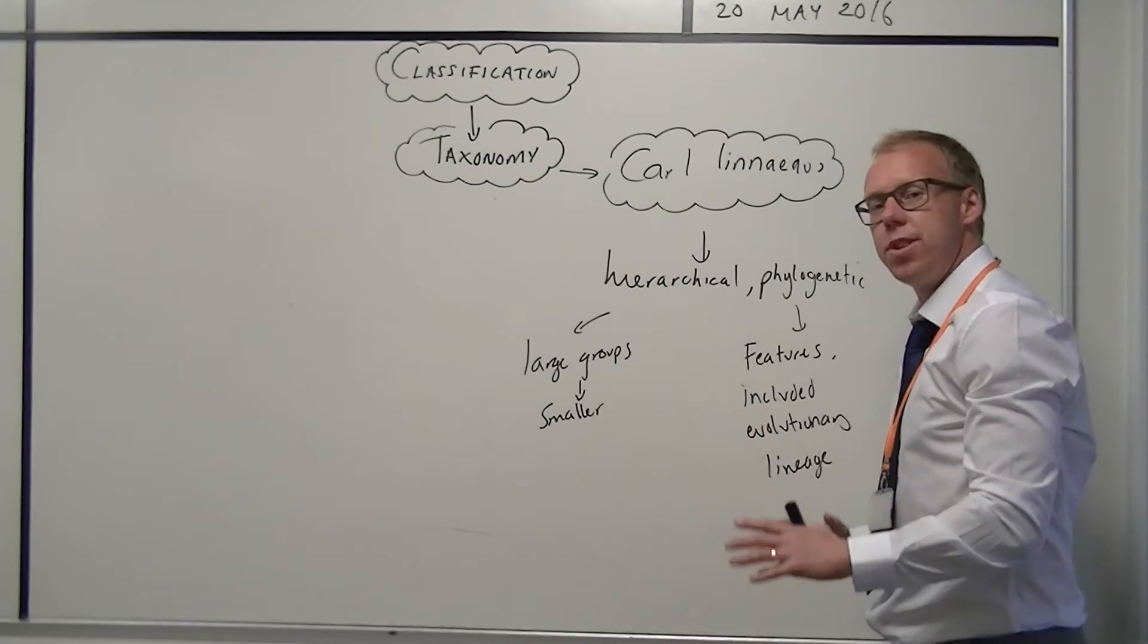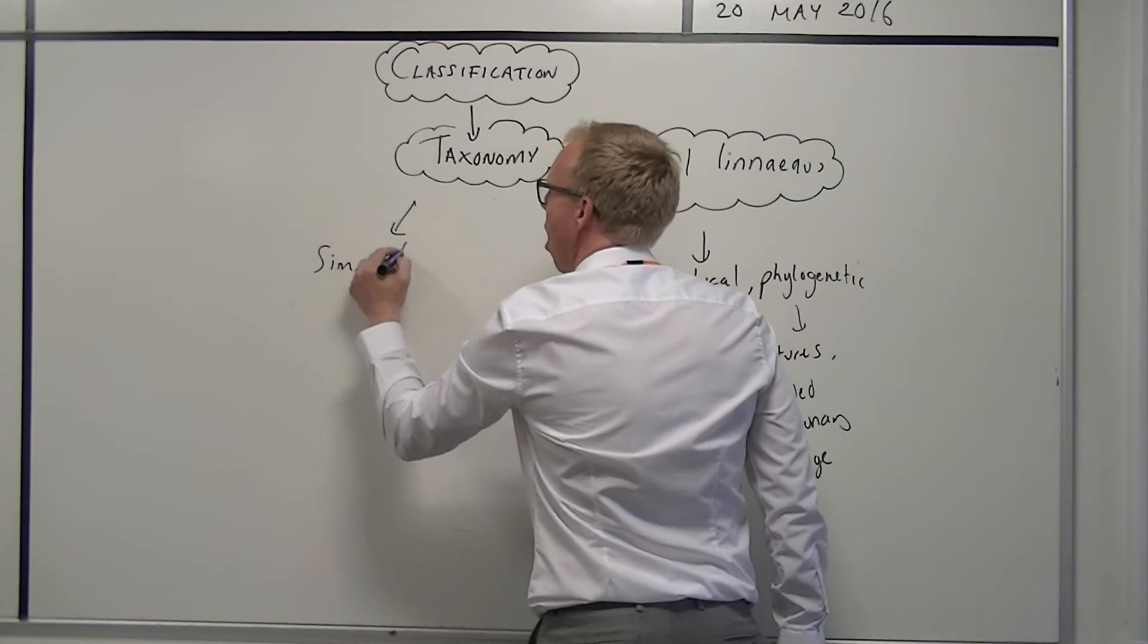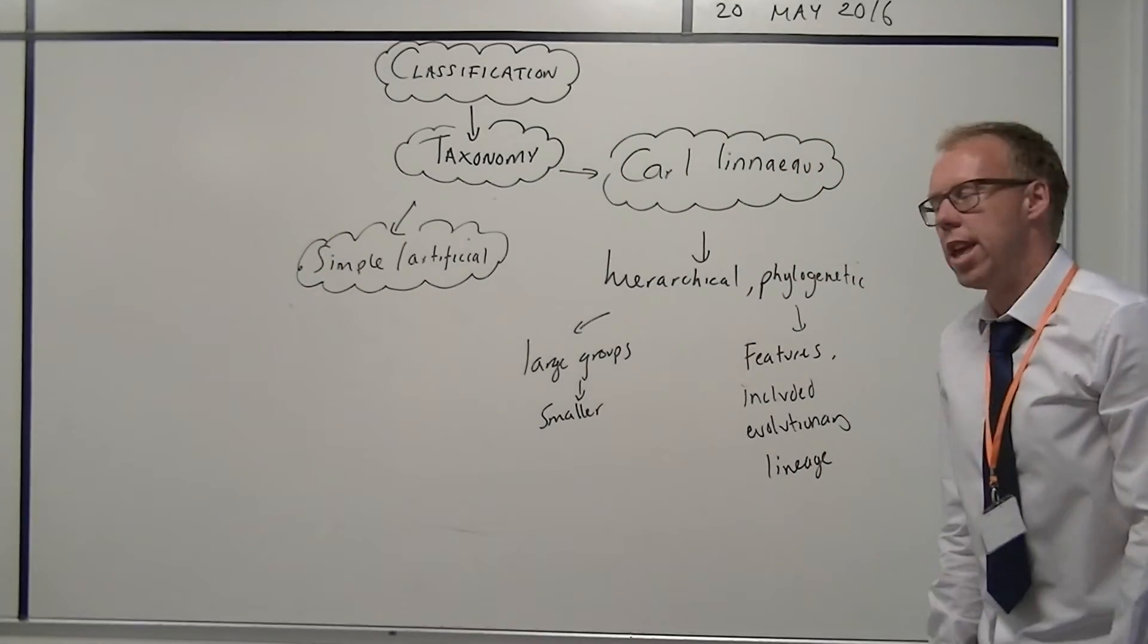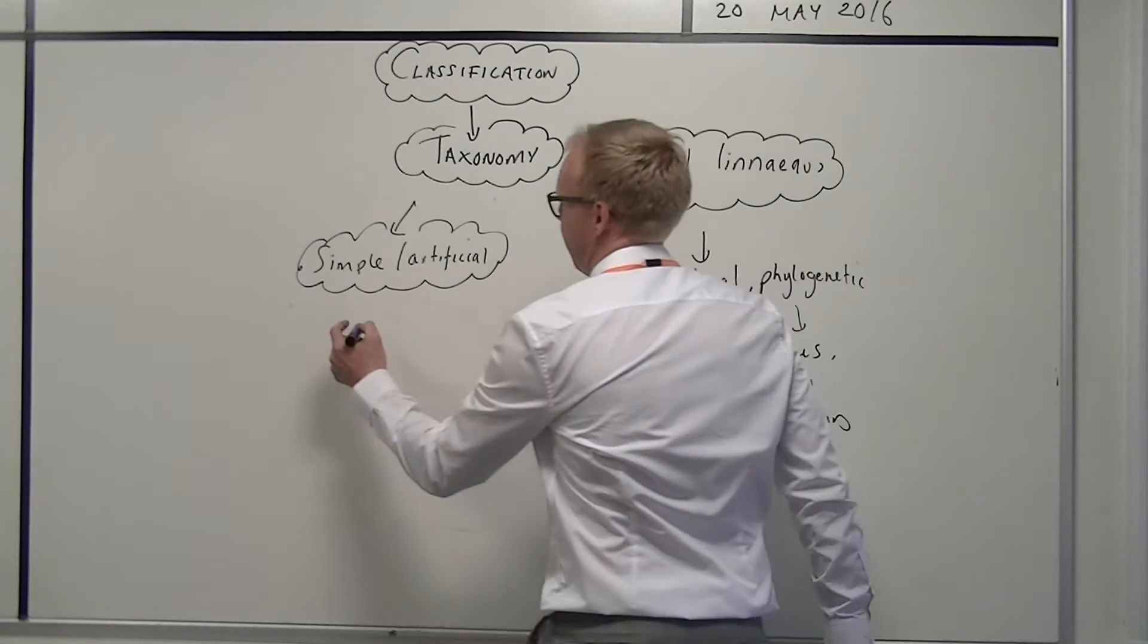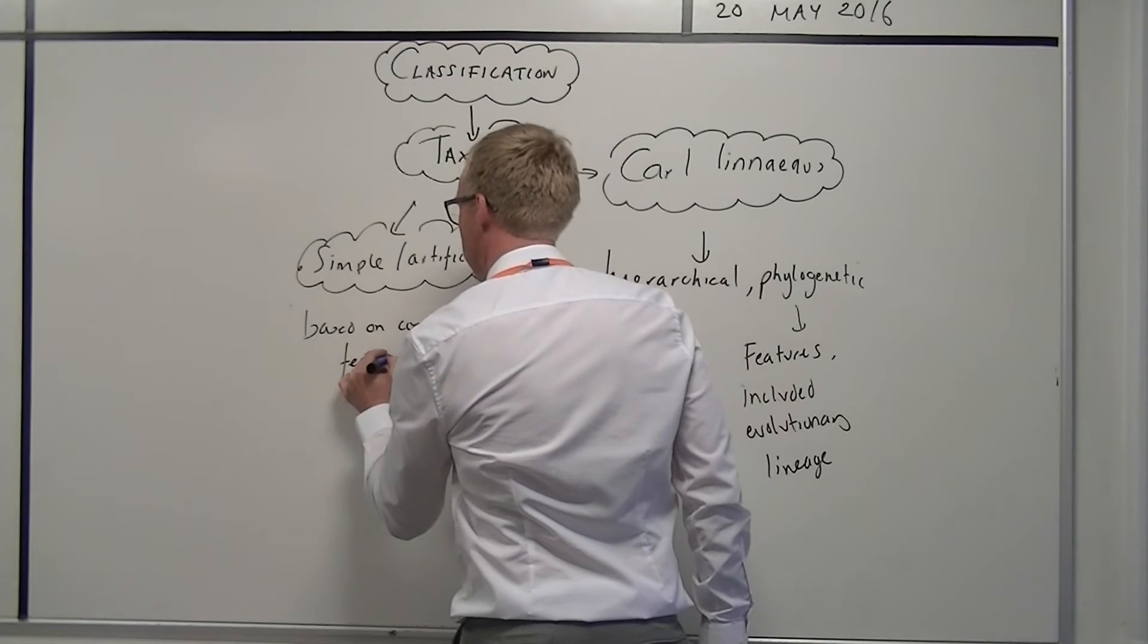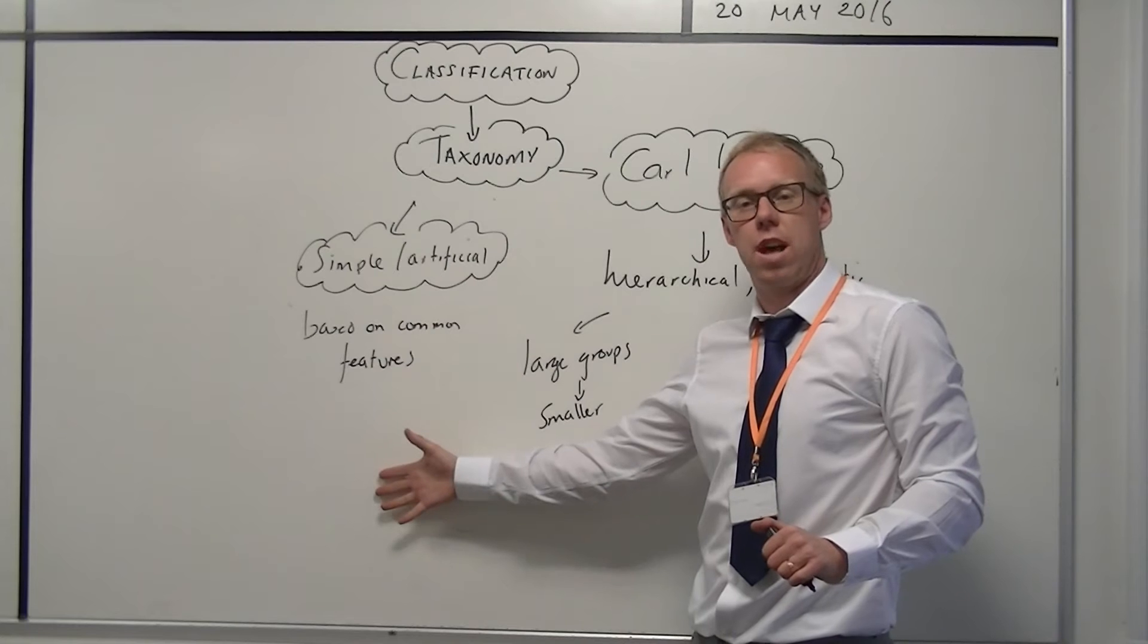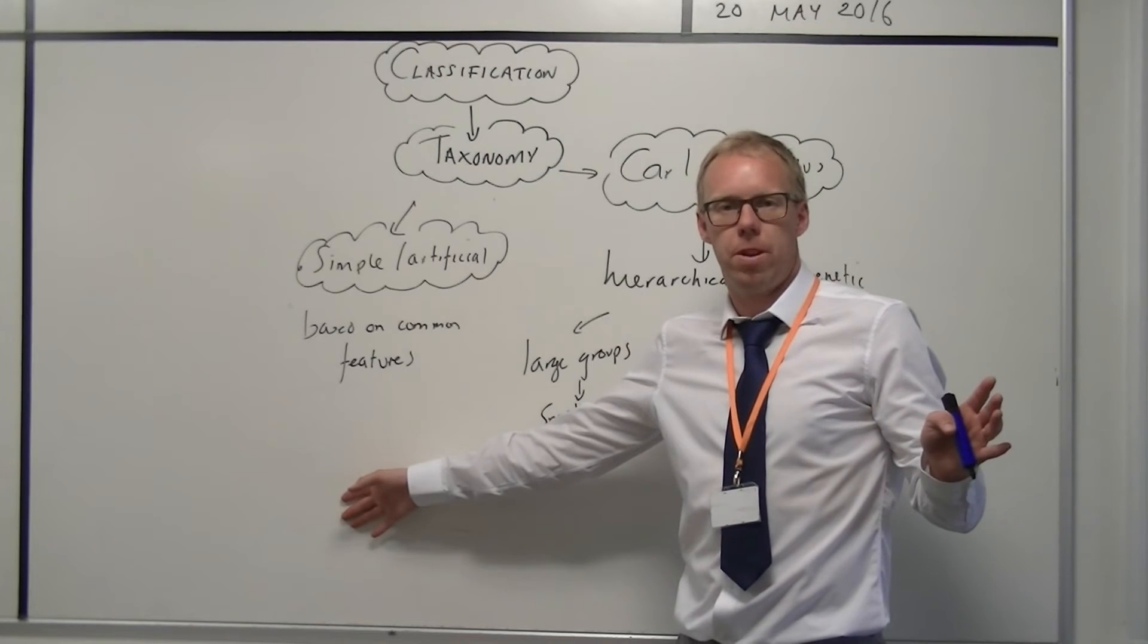There are other methods of classifying. There is what we call the simple or artificial method of classifying things, where you take and you put things into groups just based on common features. Now this has issues, it's too simple, it's too basic. There's no basis of time, and for example if you were to put things into groups that, let's say all organisms have wings, you would put insects and birds in the same group, and they're not the same group.